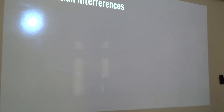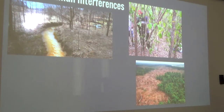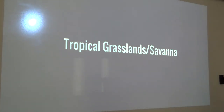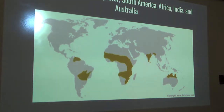Major human interference includes slashing and burning. As with tropical rainforests, cutting down the trees to get to the soil removes most of the nutrients needed to grow crops. After they cut down these trees, they can't use the soil, so they have to go in and cut down more trees. Another example of human interference is the endangerment of animals, as humans come in and kill these species.